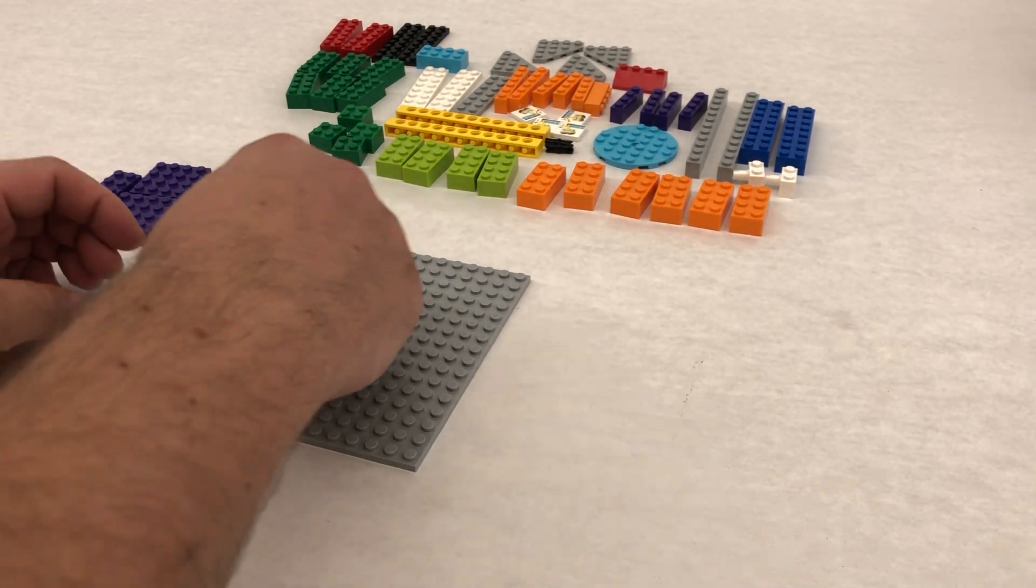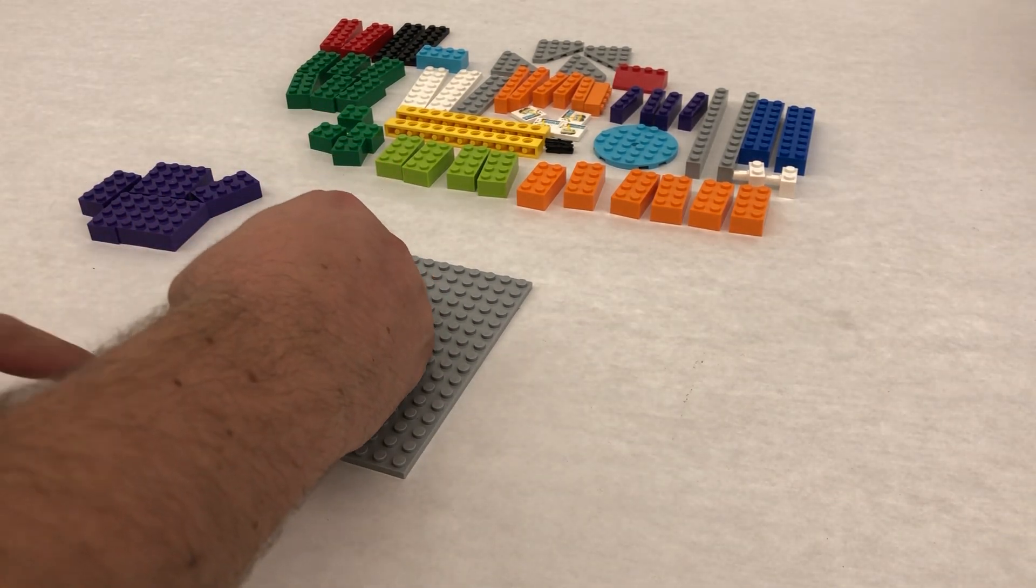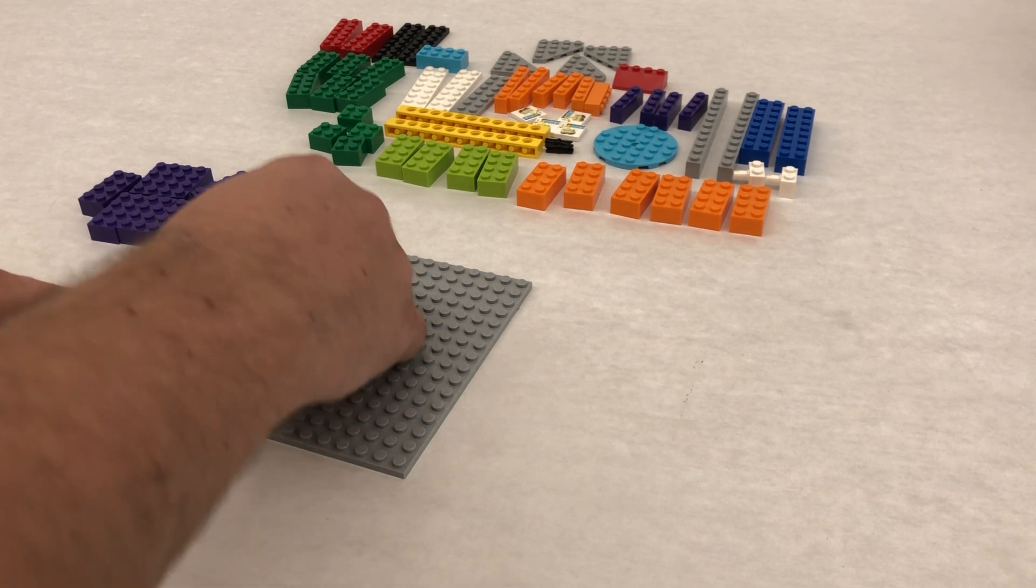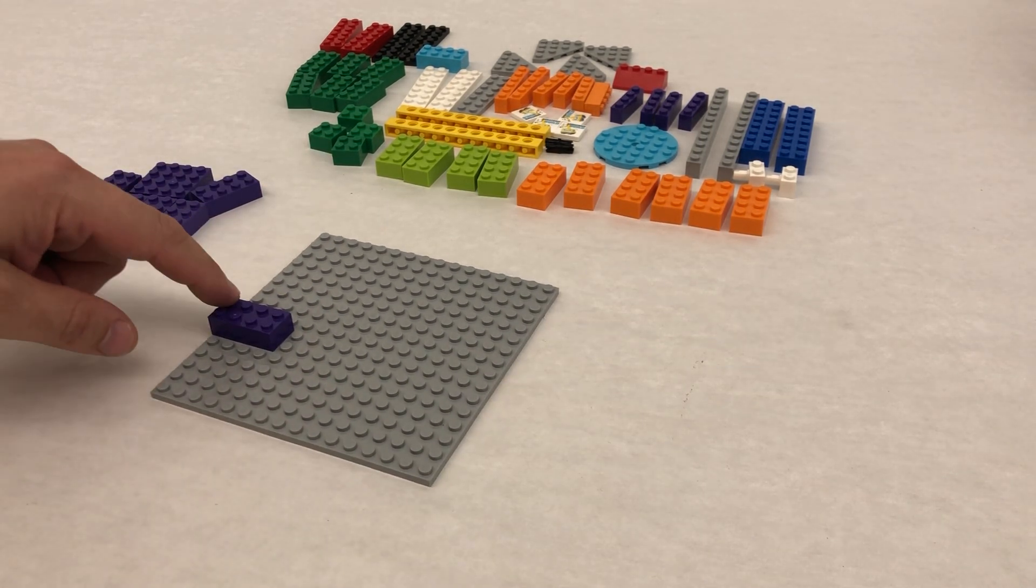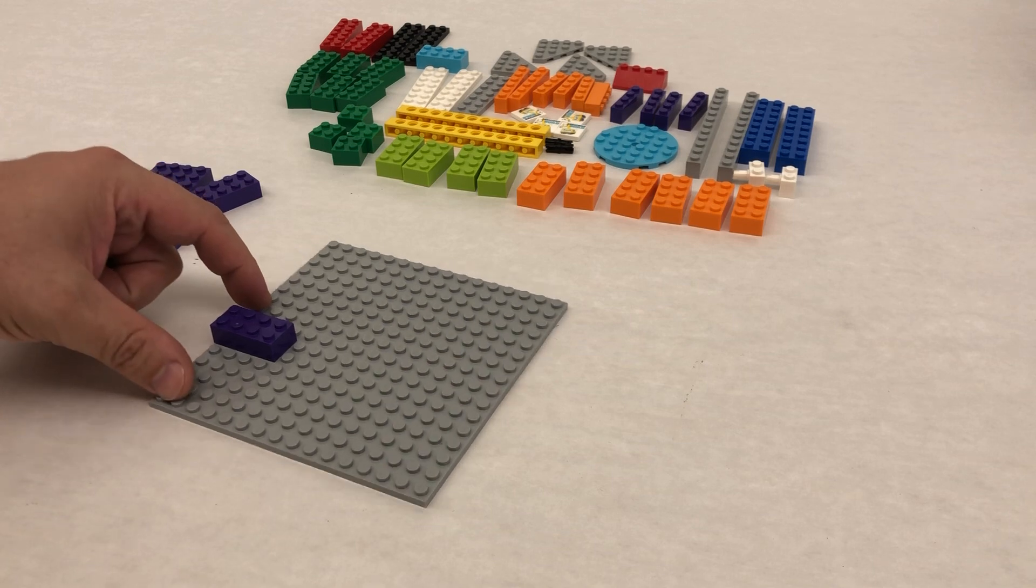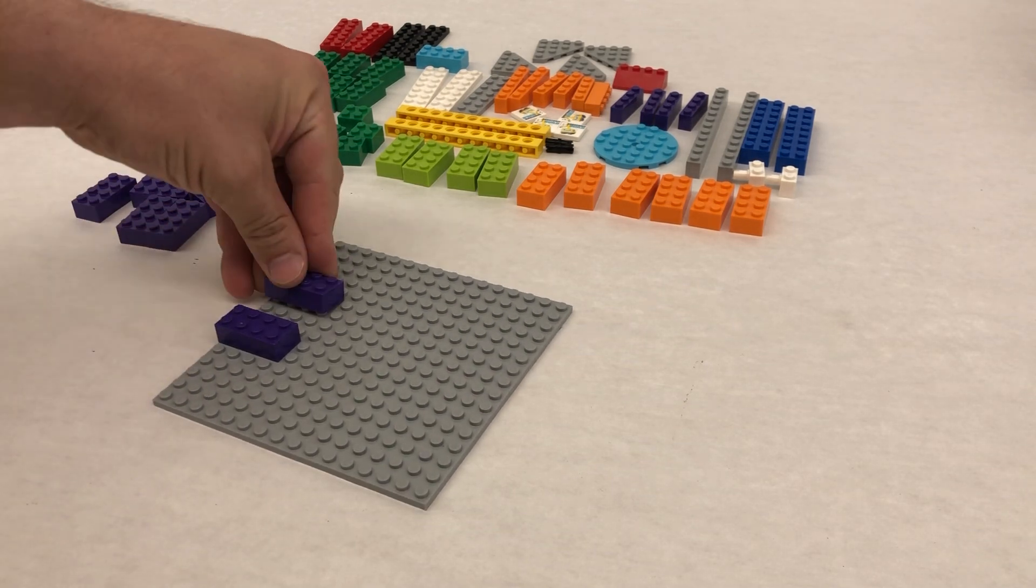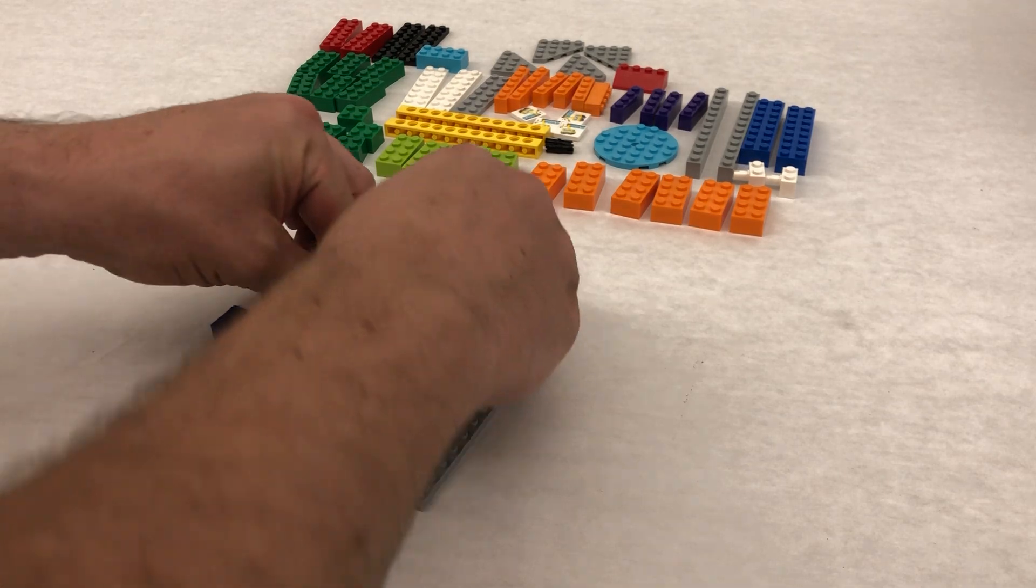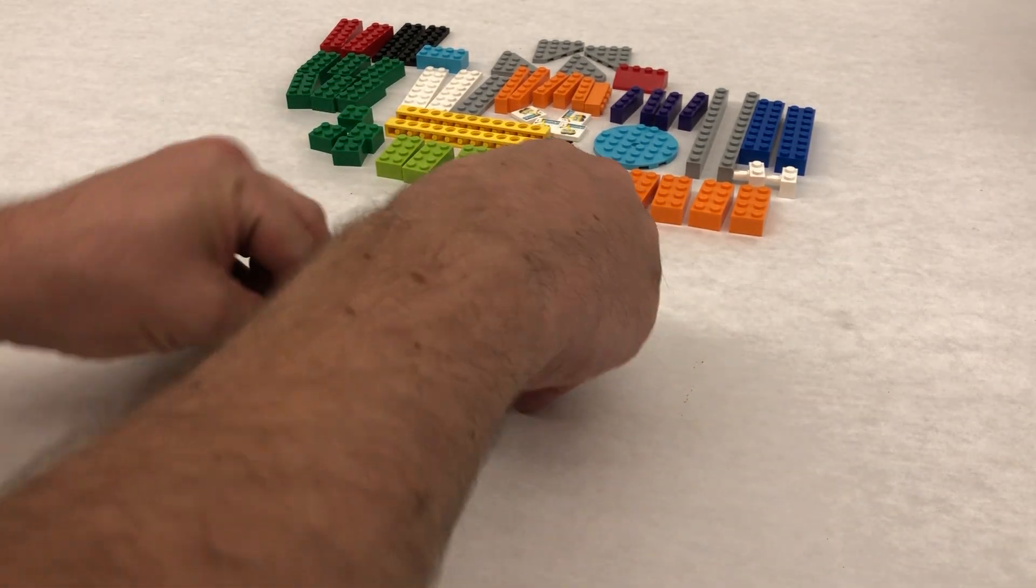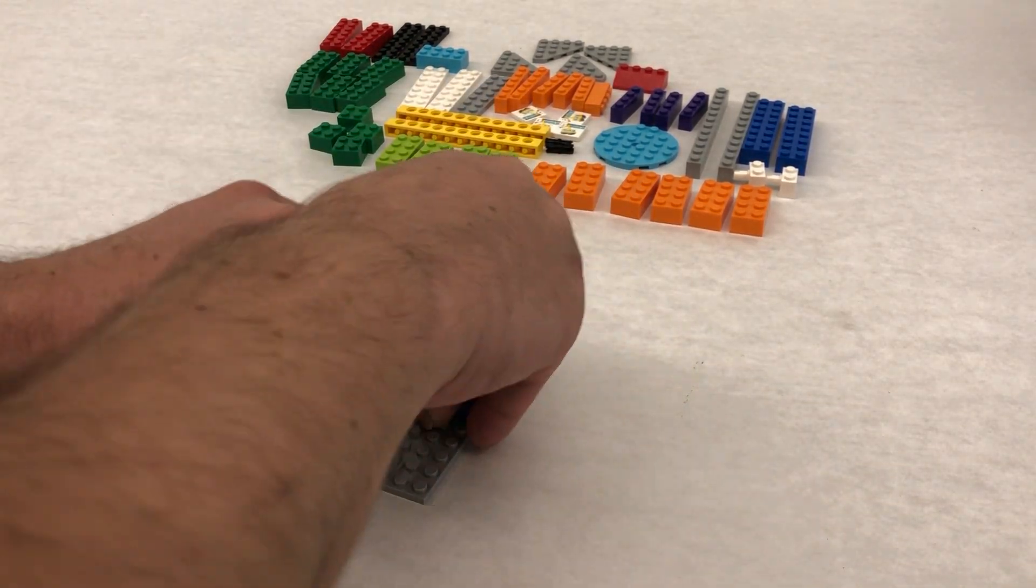All right, I'm just gonna go step by step. Step two, we're gonna count one, two, three, four, five studs and then put this on the sixth, seventh, eighth, ninth. So there's basically a two stud gap and we are just filling in bricks all the way down just like that.